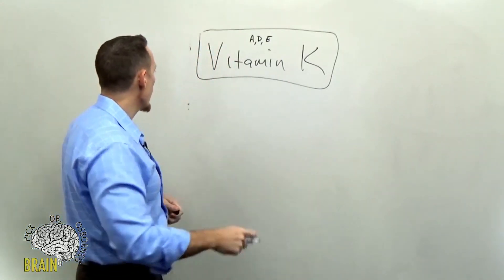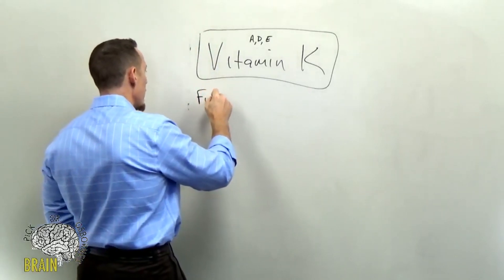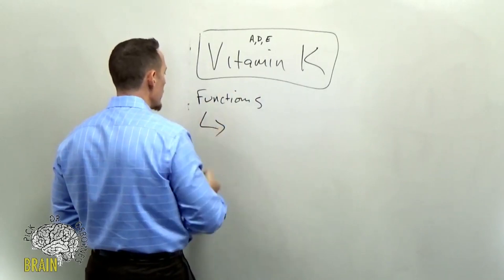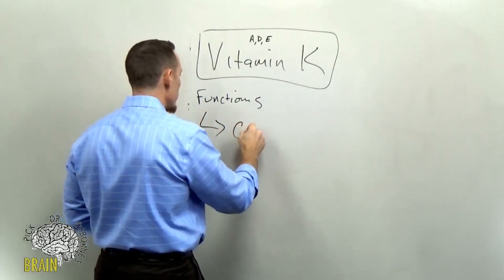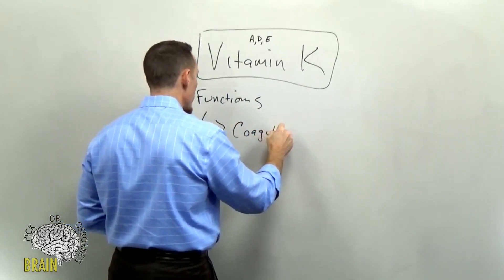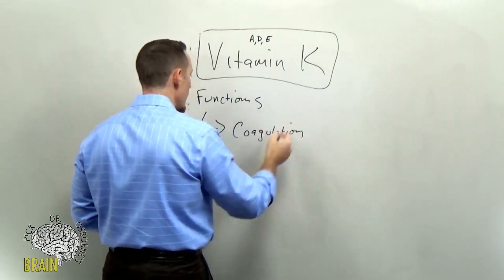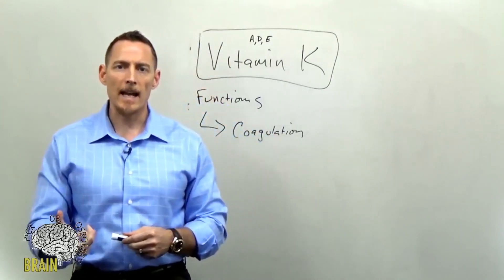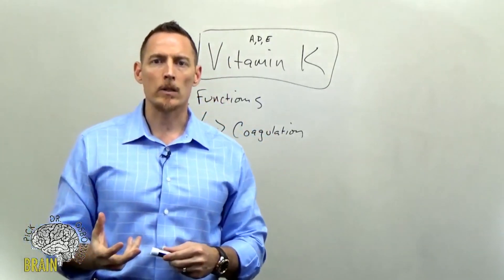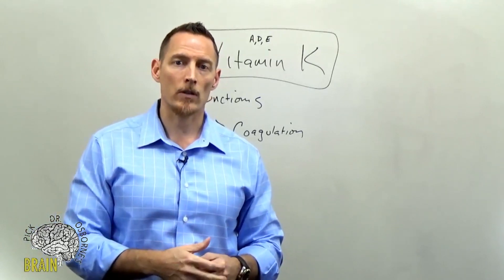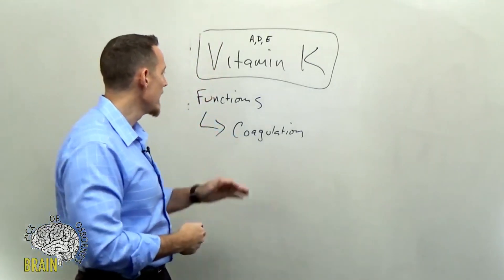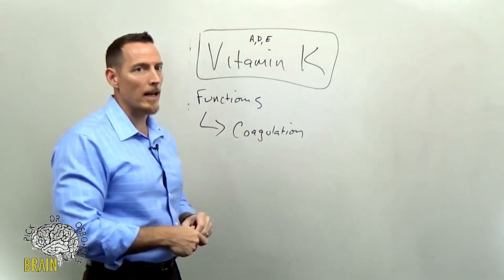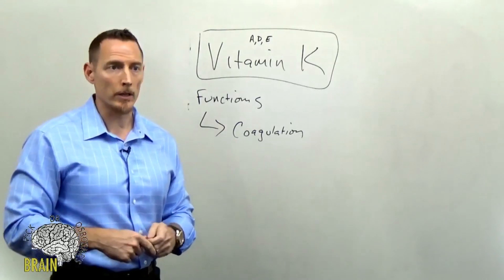So let's talk about some of the functions of vitamin K so you can kind of understand what this vitamin does, why it's important in the body. So one of the biggest functions is in blood coagulation. What does that mean? That means it helps your blood to clot. If you don't have adequate vitamin K, your blood won't clot adequately. And that can create some really serious side effects and problems. So vitamin K is necessary to help what's called your blood clotting cascade. In essence, again, helps your blood to clot.